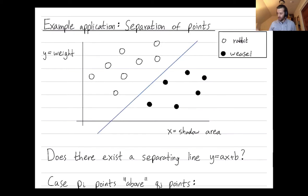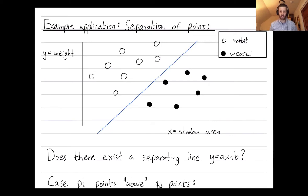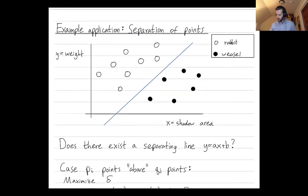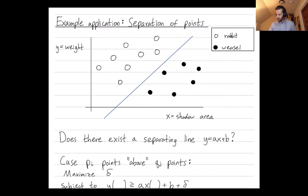So we can find a line that divides all of the rabbits from the weasels. You could build this line into your trap, and once you catch a new animal, you could use the weight and area of the animal to decide if it's a rabbit or a weasel. We'll actually be finding a line that maximizes the closest vertical distance from an animal to the line — finding the best line of separation that maximizes the closest vertical distance.